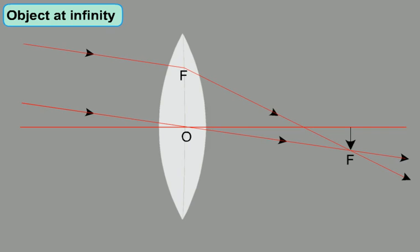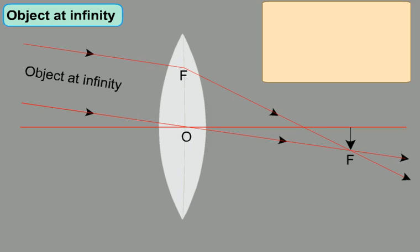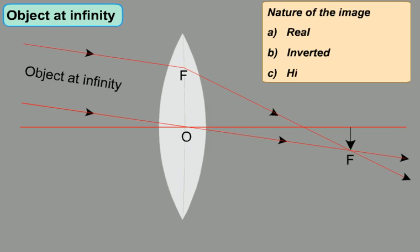So, when the object is at infinity, the image will be formed on the other side of the lens. The nature of the image will be real, as it can be obtained on the screen, inverted and highly diminished.